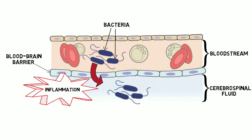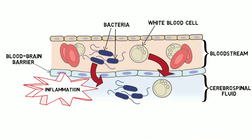This causes an influx of white blood cells and constituents of blood plasma into the cerebrospinal fluid, which contributes to inflammation and increases the volume and viscosity of the cerebrospinal fluid. These changes contribute to the development of cerebral edema, or the accumulation of fluid in the brain, as well as to the buildup of pressure inside the skull, known as intracranial pressure.